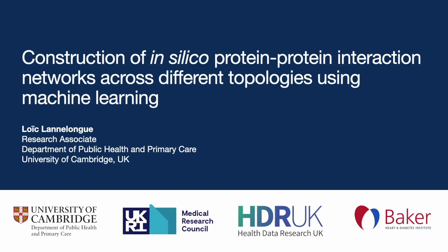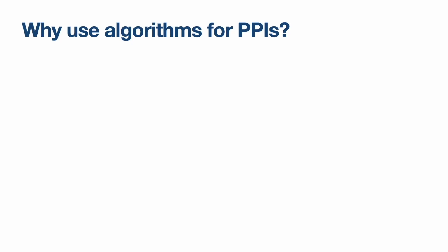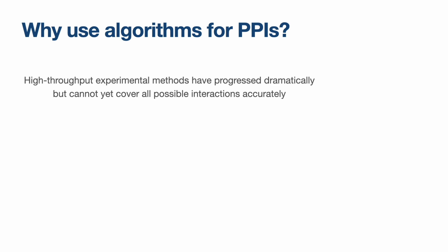My name is Loic Lanlong. I'm a research associate at the University of Cambridge, and I will talk about my poster on predicting protein-protein interactions. I'm sure I don't need to convince any of you of the importance of proteins, but maybe why do we want to use algorithms for PPIs? One reason is that experimental tools such as the yeast-2-hybrid have made great progress, and recent initiatives have attempted to map the proteome with little study bias.